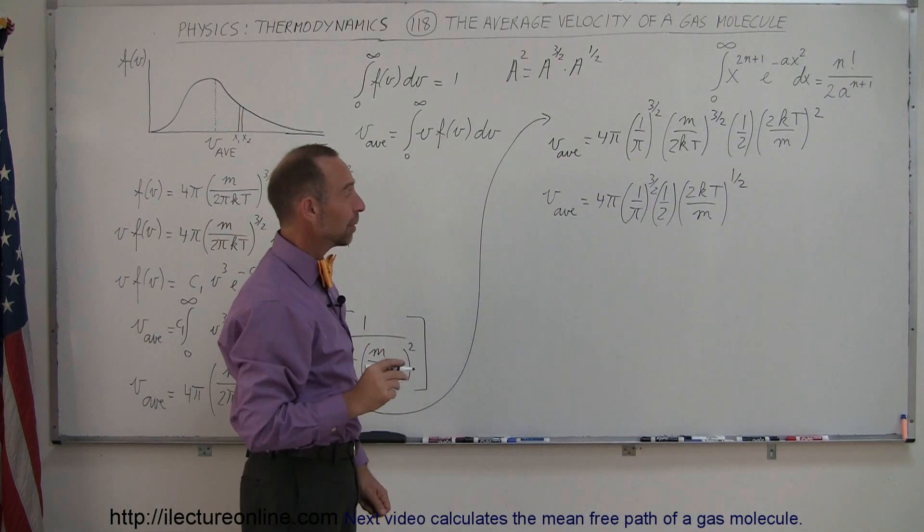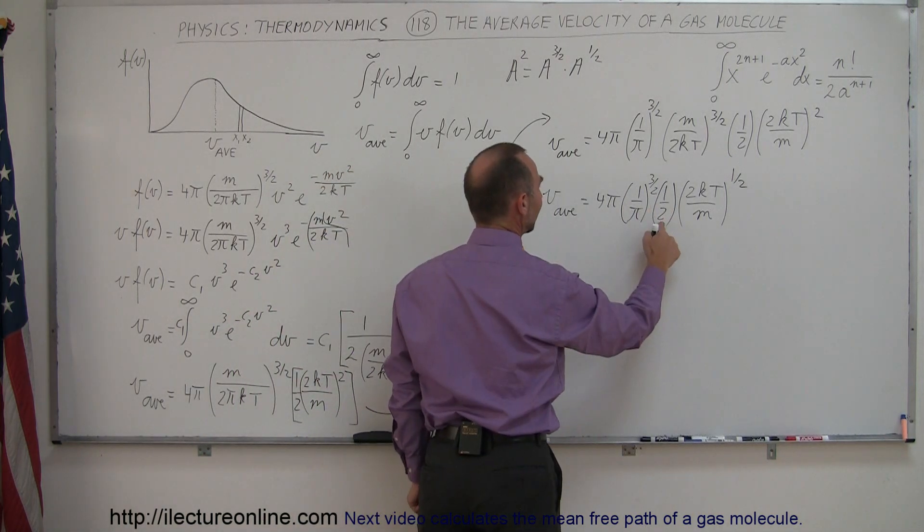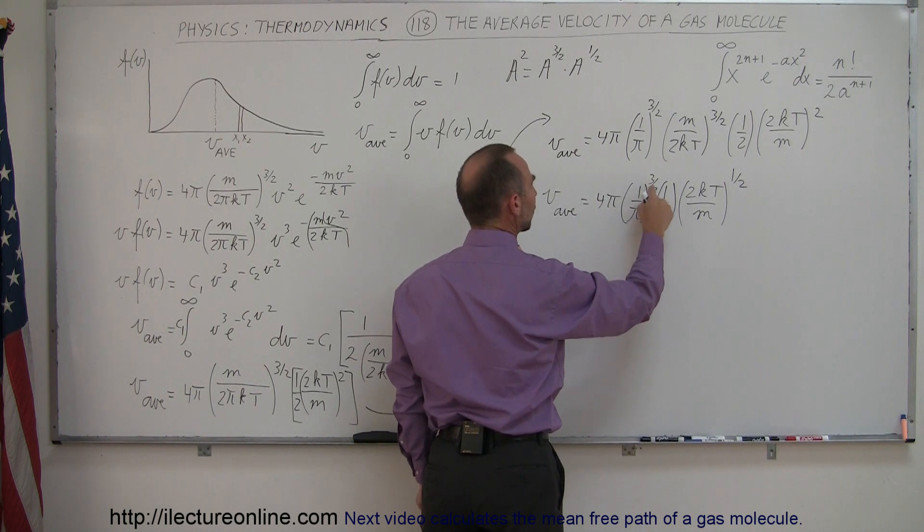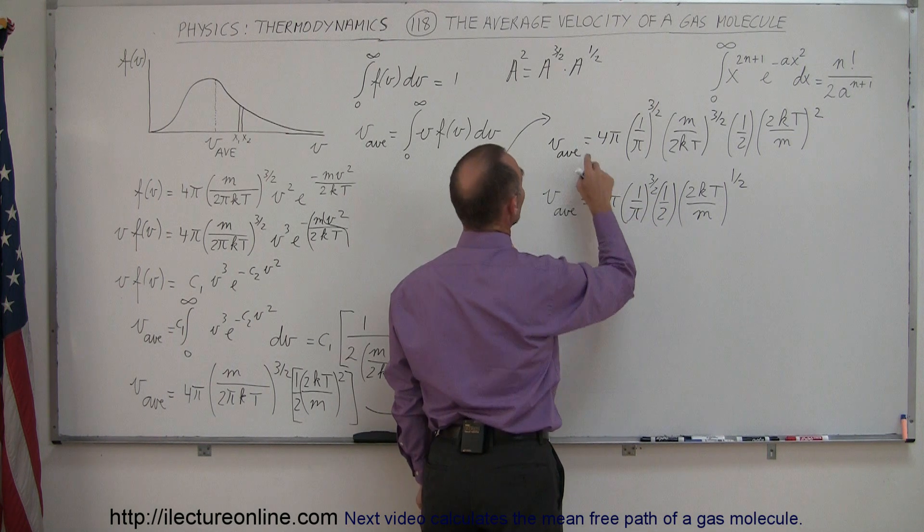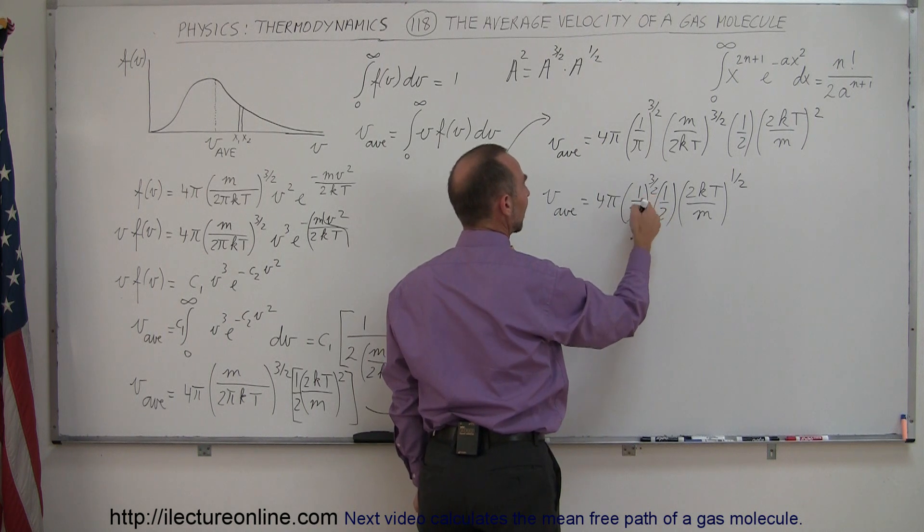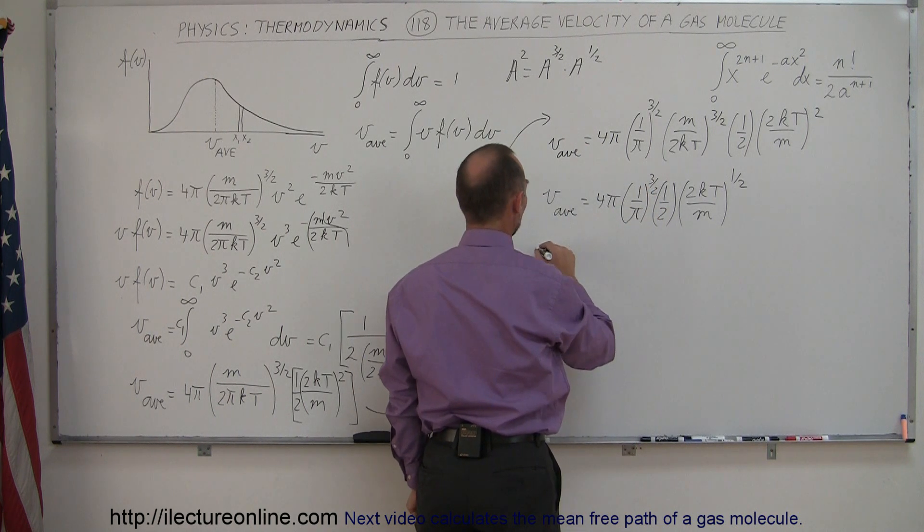Alright, a little bit more simplification. 4 and 1 half, well that becomes 2, and 1 over π to the 3 halves power times π, there's a similar situation again. Have π to the first and 1 over π to the 3 halves, that leaves me 1 over π to the 1 half power.